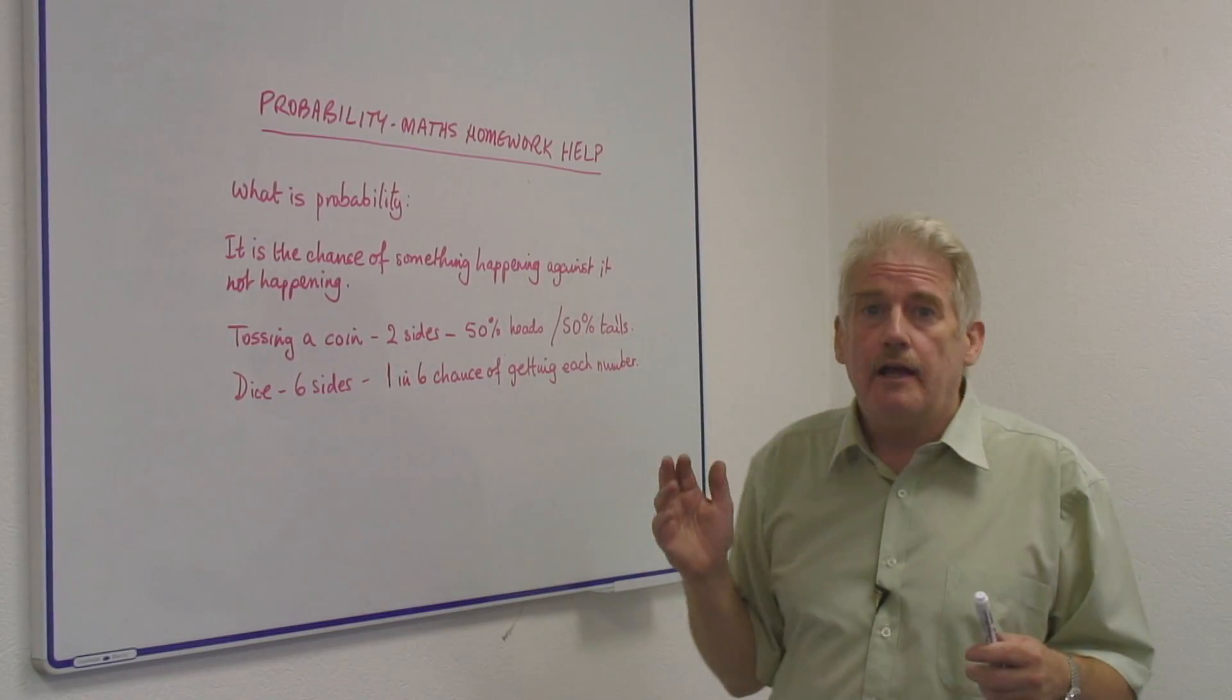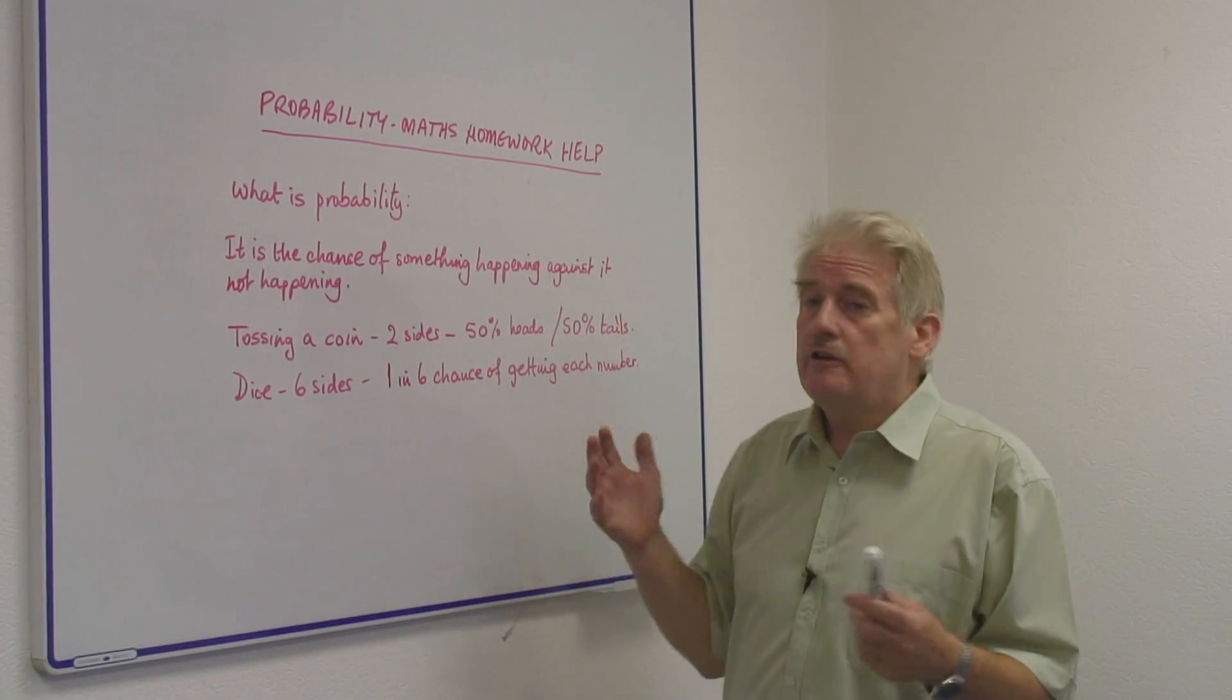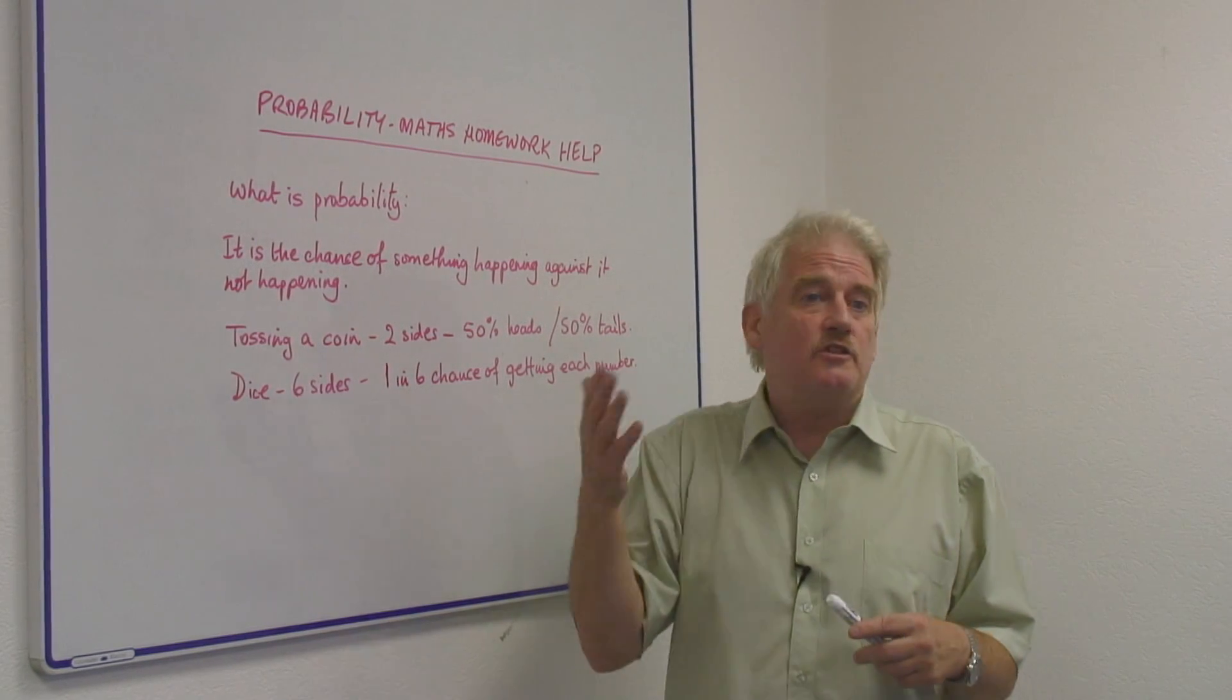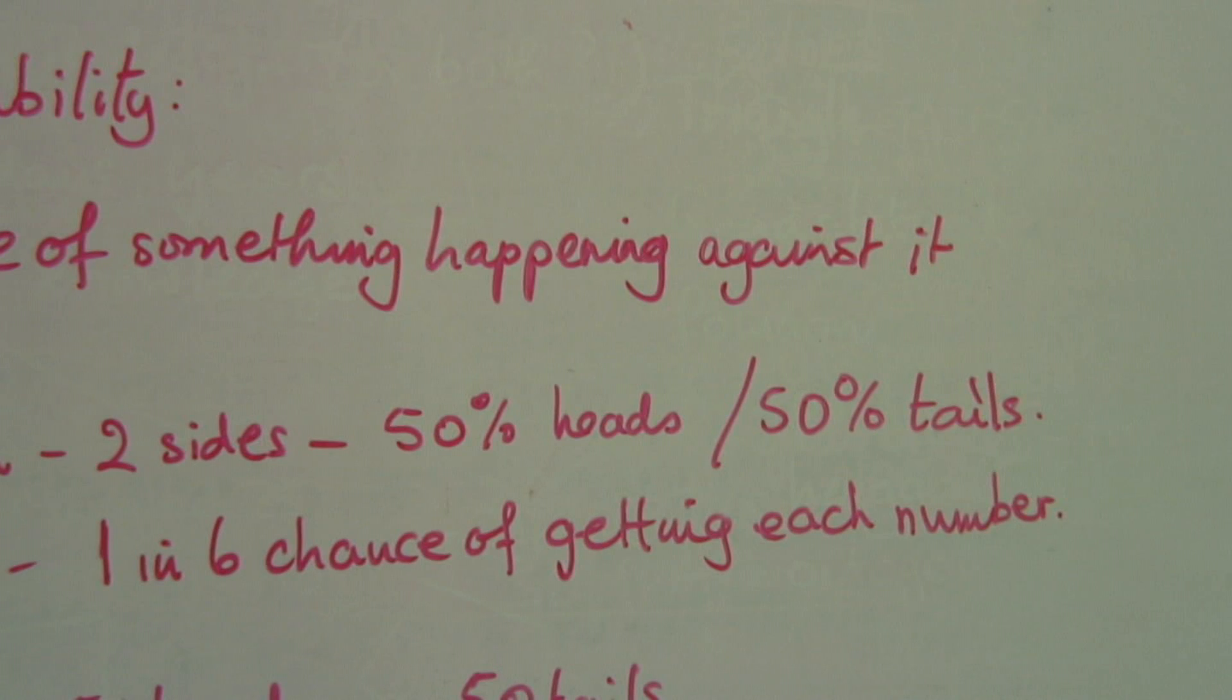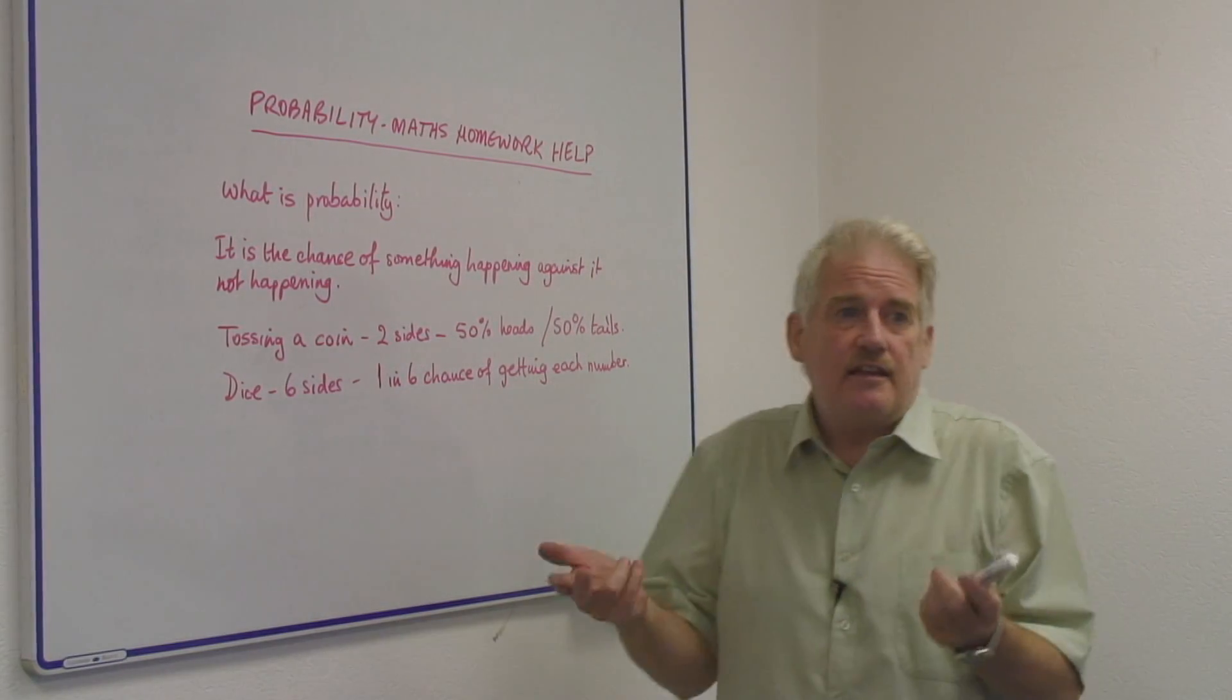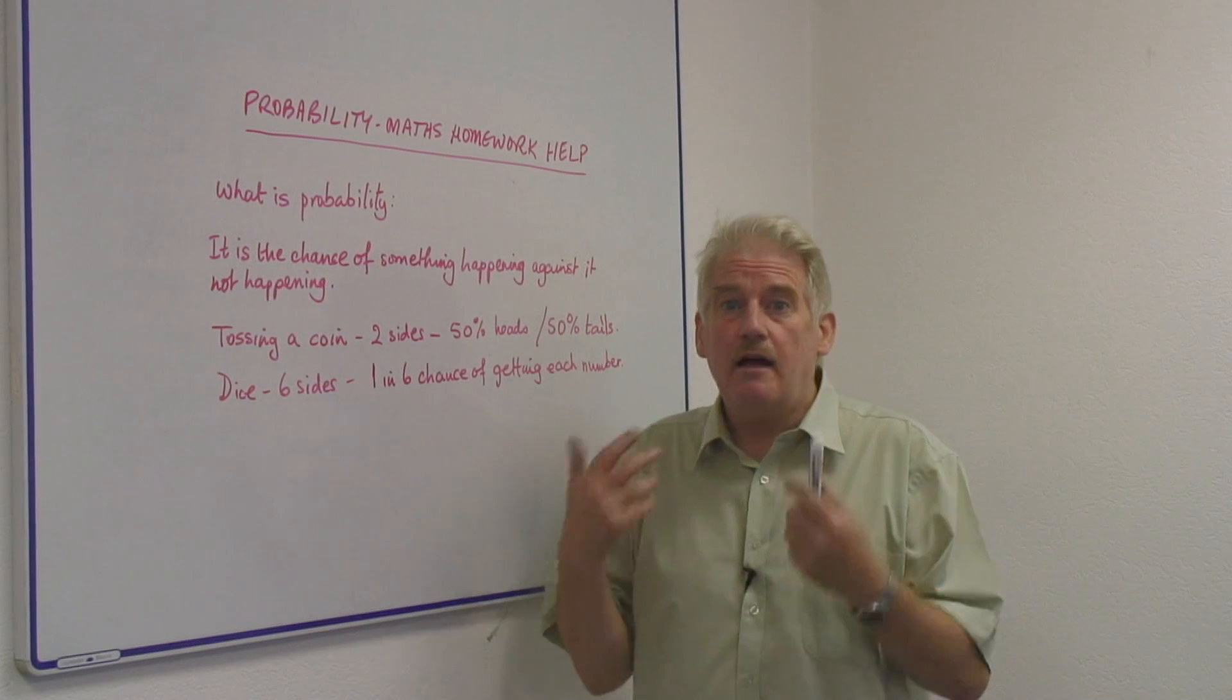So if I take a coin out of my pocket and I toss it, I know it's got two sides. And I know it's got to either land with its head side up or its tail side up. So there's a 50% possibility it will land with its head up and 50% tails up. So that is a very simple example. And it doesn't matter how many times I toss it.